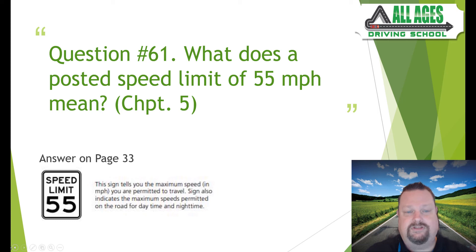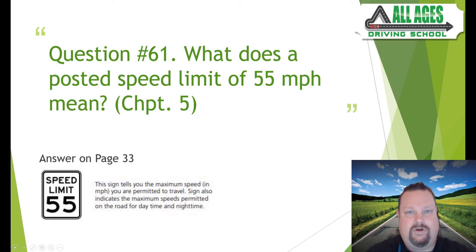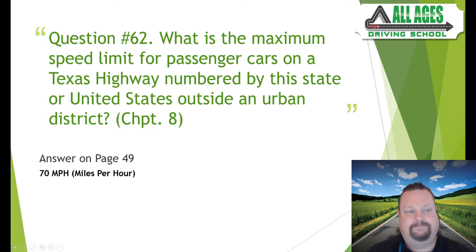Question number sixty-one: what does a posted speed limit of 55 miles per hour mean? Answer on page 33. The sign tells you the maximum speed in miles per hour you are permitted to travel, for both daytime and nighttime under normal and ideal conditions. Anything adverse — affecting vision or traction such as rain or reduced visibility — means you should not drive at the posted limit. Speed limits apply only under normal and ideal driving conditions.